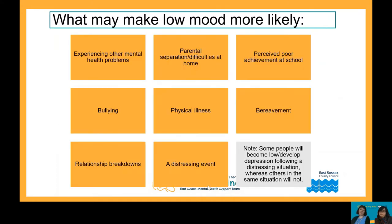There are certain things that might make experiencing low mood more likely — for example, children who experience anxiety, worry, difficulties at home, bullying, or poor performance at school. All events that you might expect would impact you as an adult are also likely to impact children and teenagers. It's worth noting that just because your child has experienced one or more of these events, they are not definitely going to experience low mood — humans are very resilient.